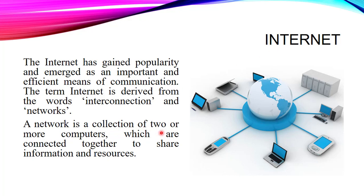A network is a collection of two or more computers which are connected together to share information or resources. When two or more computers are combined together for sharing data, information, or other contents, then it will be termed as a computer network. So this internet is a type of computer network which is widely spread.